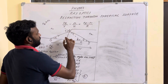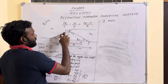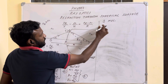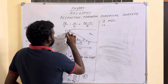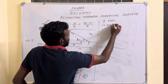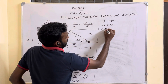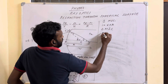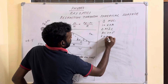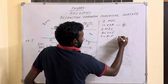Now consider triangle MOC. The exterior angle equals the sum of opposite interior angles, so i = α + β — this comes from triangle MOC where i is the exterior angle and α + β are the interior angles. Similarly, from triangle MIC: β = r + γ, so r = β − γ. Let i = α + β be equation number 4 and r = β − γ be equation number 5.